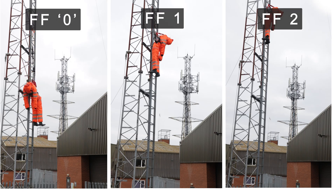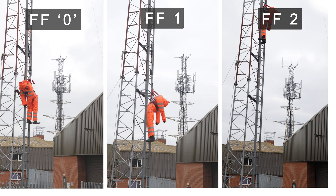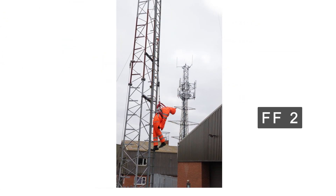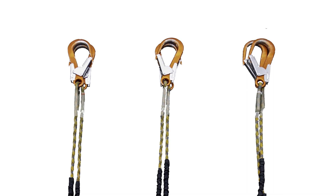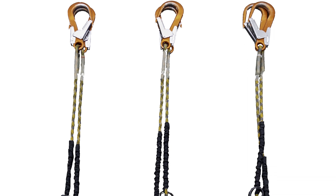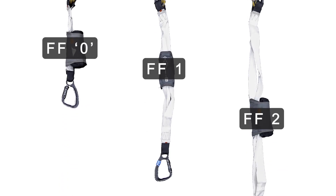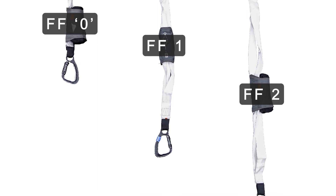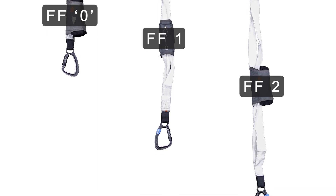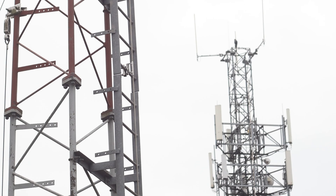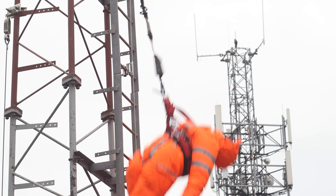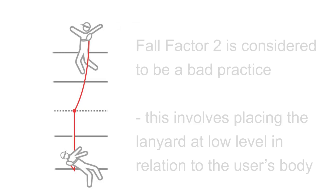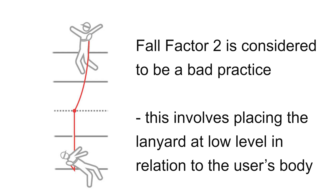This is very evident when looking at a fall factor 2 scenario. The user has now climbed a full lanyard length above the anchor point they are using, so will be free falling twice their lanyard length as a minimum. Notice the increased shock absorber deployment required to dissipate the higher forces generated. Although a fall factor 2 is sometimes necessary when climbing, in general it is seen as bad practice.